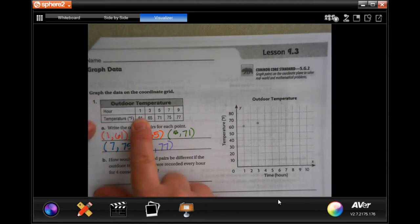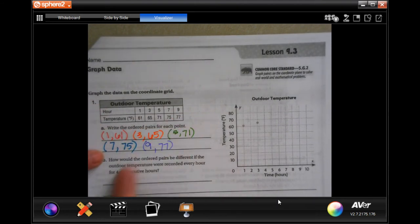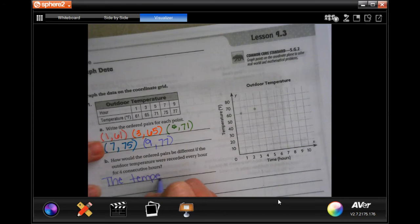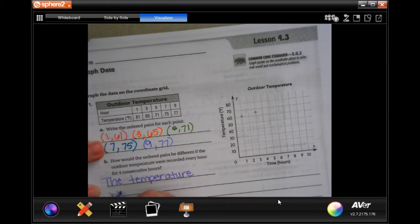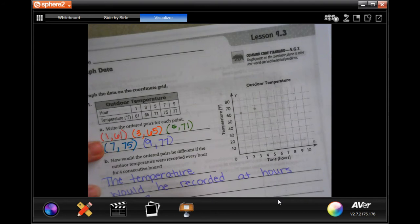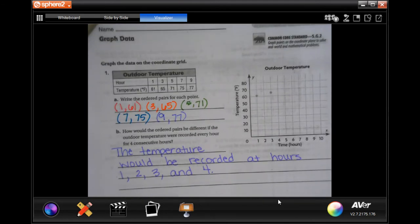So instead of one, three, five, seven, and nine, the temperature would be reported at hours one, two, three, and four. That's it guys, that's literally all it is.